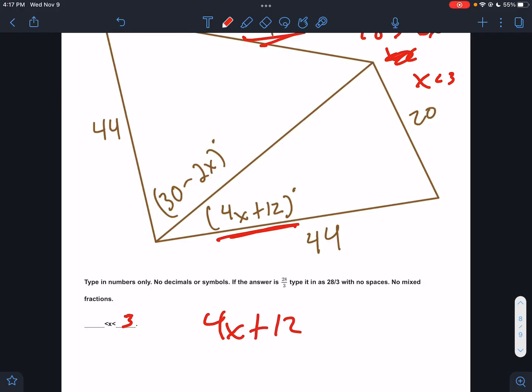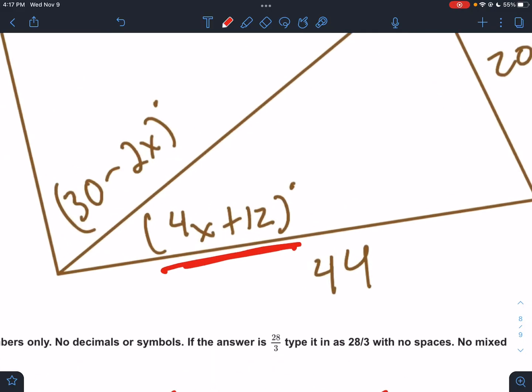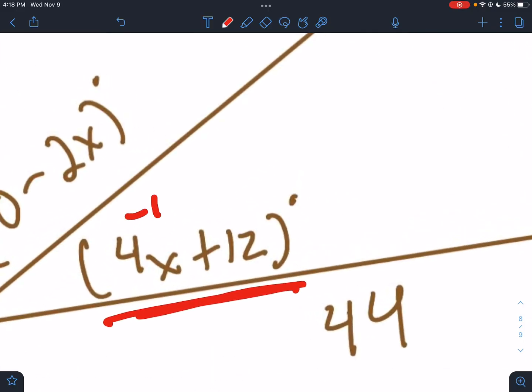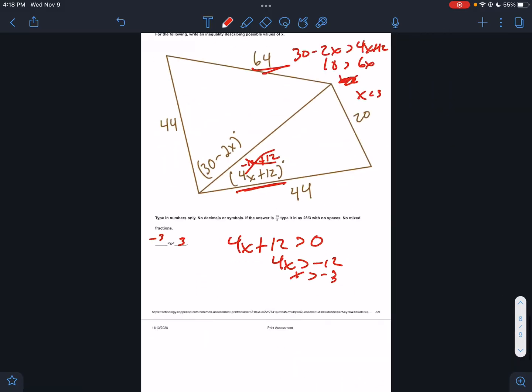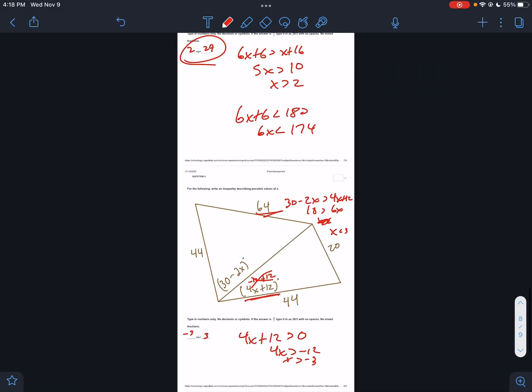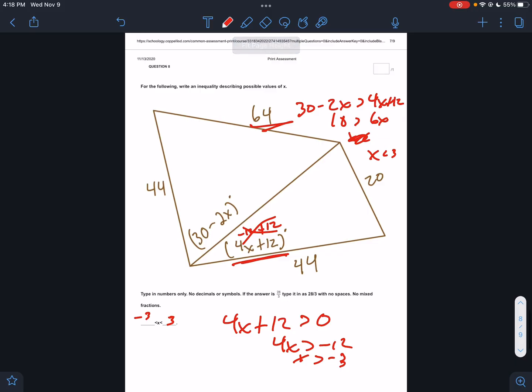Which one would disappear first? They're shrinking, shrinking, shrinking, shrinking. Who would be gone first? The smaller one. So 4x + 12, I need to make sure it doesn't disappear. It must stay bigger than zero. In order for it to stay bigger than zero, it has to be bigger than negative 3. Plug in negative 3, this would be negative 12 plus 12, that's gone. It can't be negative 3, it can't be smaller than negative 3, it has to be bigger than negative 3.